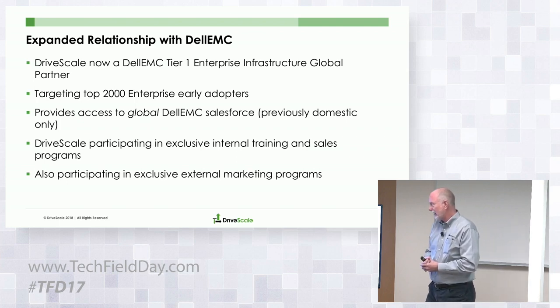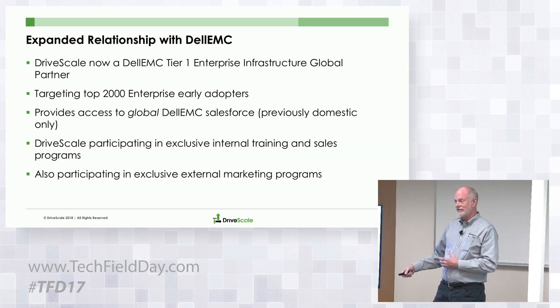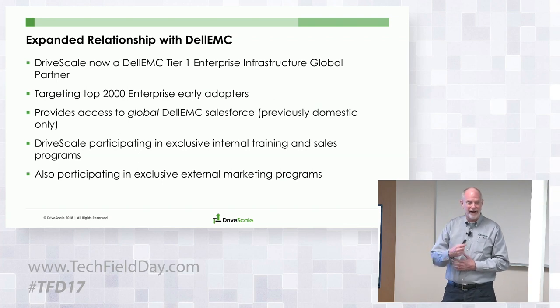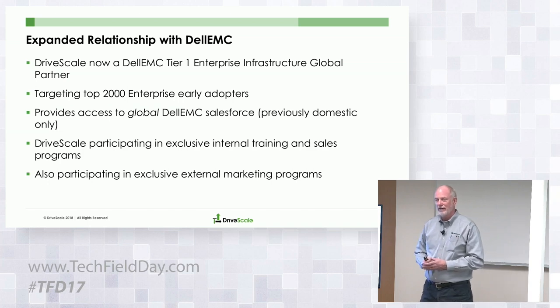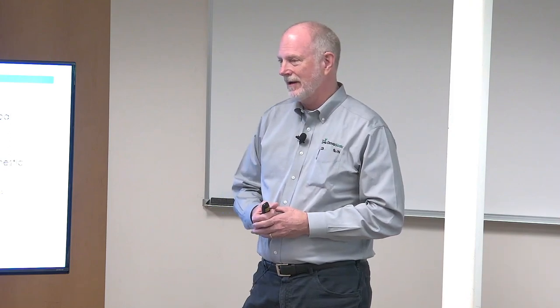We'll move probably five or six million dollars through the Dell price list this year. That ramp from zero to five million was on the tier two price list, and they saw that and said let's put them on tier one. There are only 40 companies on the tier one price list, and Drivescale is by far the smallest. We're now going around the world training up all the TSRs — technical sales reps — who do architecture for Dell. It's a big group, but there's a lot of opportunity working together with Dell.